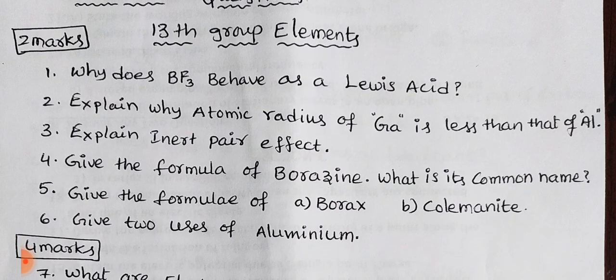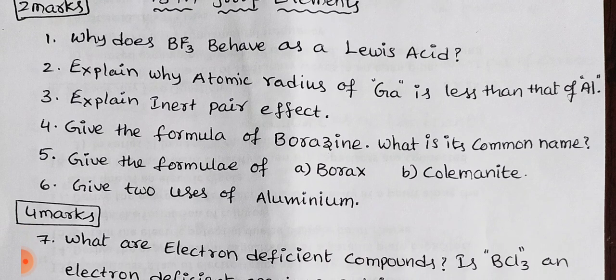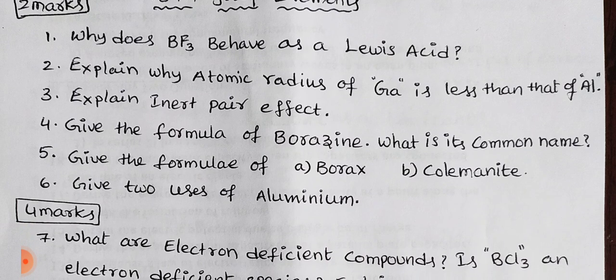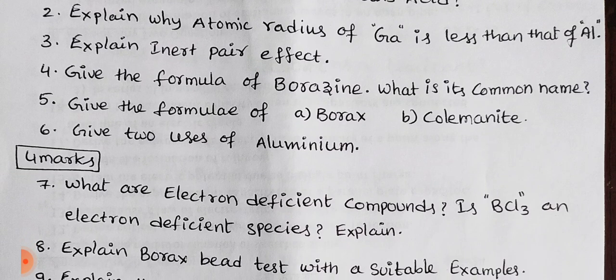The 2-mark questions for 13th group elements include: BF3 behaves as a Lewis acid — explain. Why is the atomic radius of gallium less than aluminum? What is the inert pair effect? What is the formula of boroxine and what is its common name? Give the formula of borax and give two uses of aluminum.